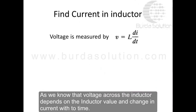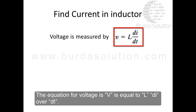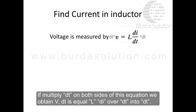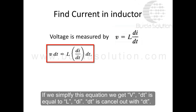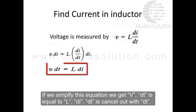As we know, the voltage across the inductor depends on the inductor value and the change in current with respect to time. The equation for voltage is V = L di/dt. If we multiply dt on both sides of this equation, we obtain V dt = L di/dt · dt, which simplifies to V dt = L di.